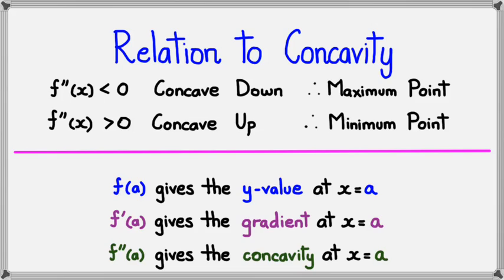So basically, with f''(a) you can tell whether it's concave up or concave down. If f''(a) is less than 0, it's concave down, which means it's a maximum point. And if f''(x) is greater than 0, it's concave up, so it's a minimum point.